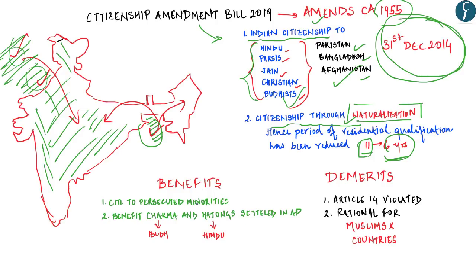The Chakma and Hajong refugees were originally residents of the Chittagong Hill Tracts of former East Pakistan and had to flee when their land was submerged by a dam project in the 1960s, along with instances of religious persecution. They entered India through Mizoram and settled there, but later the Government of India resettled them in Arunachal Pradesh. These are two very obvious benefits arising out of the Citizenship Amendment Bill 2019.